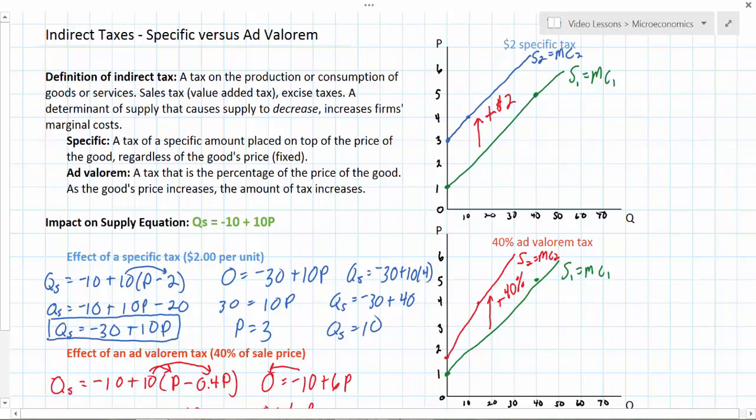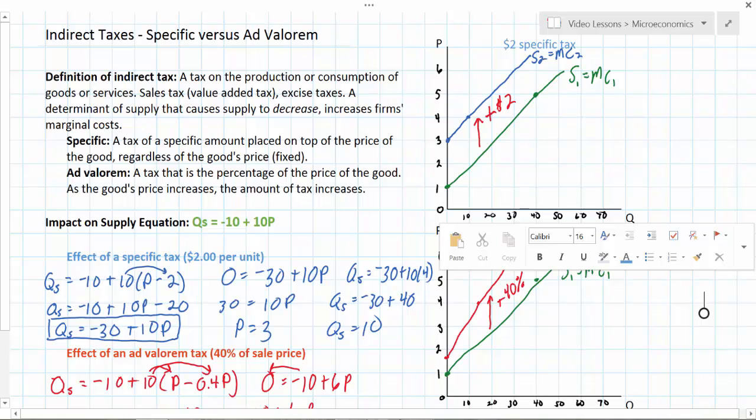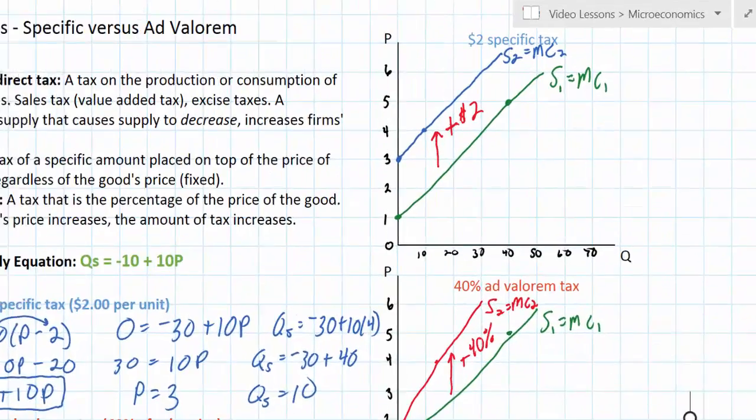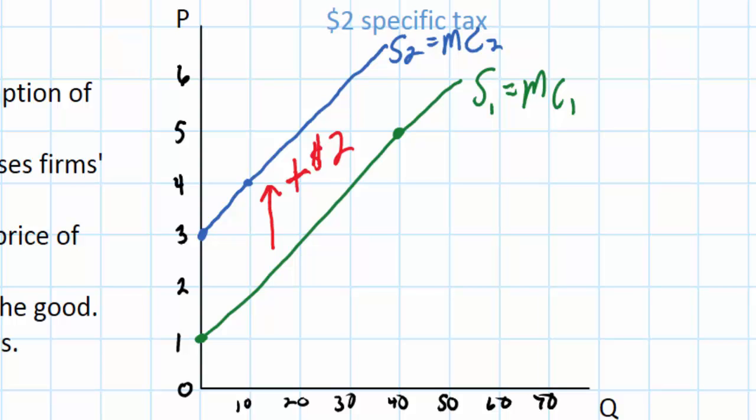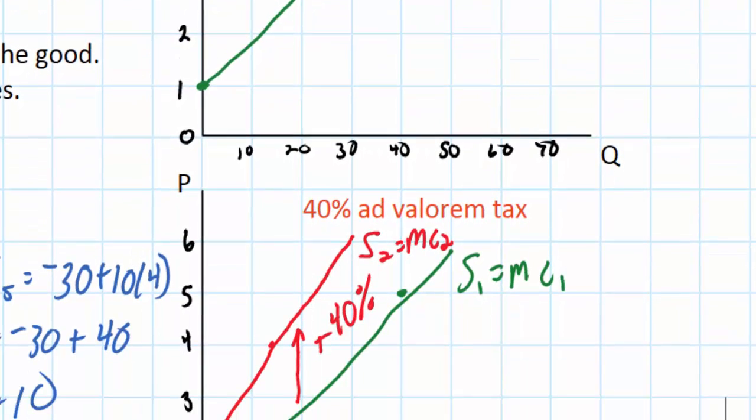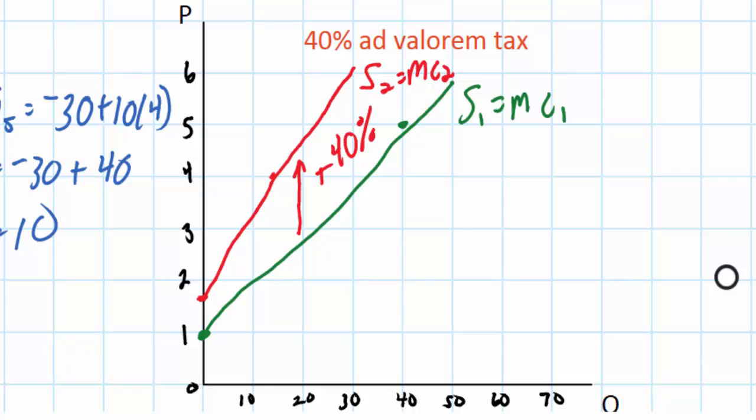So now we've shown the impact of both a specific tax and an ad valorem tax. The main difference is that a specific tax will shift the supply curve up by a constant amount at all points whereas an ad valorem tax will shift the supply curve up and change the gradient of the supply curve. However it pivots along the quantity intercept. If I connected both of these all the way down to where the curves have begun that point does not change. That is still negative 10. However the gradient has increased when there is an ad valorem tax placed on a good.